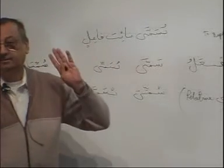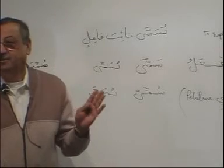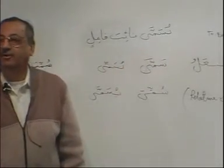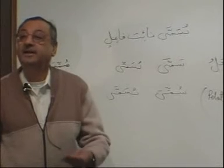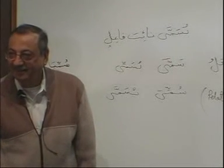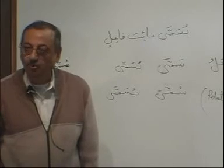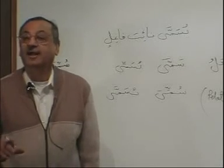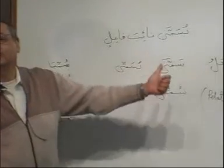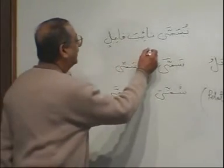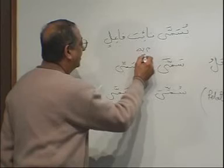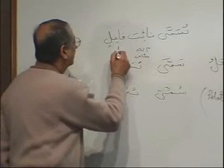Naibah is mansub. Where is the naib fa'il for 'yusamma'? It has to be marfu. It is mustatir — takdiru huwa. And what is it called? This is your maf'ulun bihi. 'Naibah' is mudaf, and this is mudaf ilayhi.